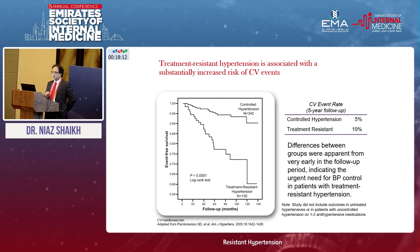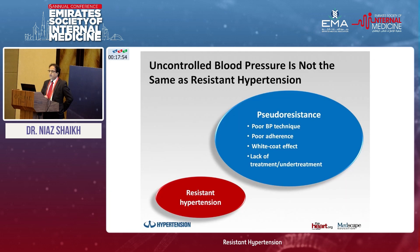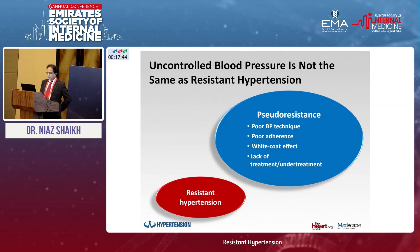The event-free survival in those patients who have controlled hypertension is less as compared to those patients who have refractory or resistant hypertension. It is very important to differentiate what we mean by refractory or resistant hypertension because there is a large group of patients who we label as pseudo-resistance. When we talk about pseudo-resistance, we are talking about blood pressure technique, adherence, white coat effect, and lack of understanding of the treatment.